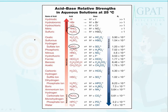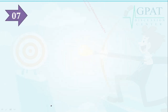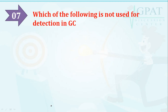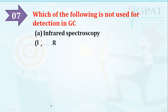The acid-base relative strength order from highest: hydroiodic acid, hydrobromic acid, hydrochloric acid, nitric acid, and sulfuric acid are the strongest. Question number seven: which of the following is not used for detection in GC? Options are: infrared spectroscopy, NMR, flame ionization, or electrical conductivity. The right option is NMR.